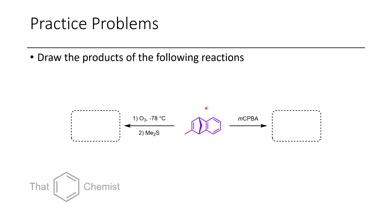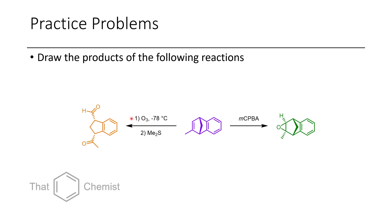In this first problem, we take this alkene and treat it with ozone followed by dimethyl sulfide. That's going to give us a different product than if we treat it with MCPBA. In the first case, we undergo the ozonolysis reaction, which affords this keto aldehyde. The reason we have stereochemistry on these two centers is because we had previously had stereochemistry on this sp3 bond outside of this ring. This five-membered ring, which was bicyclic, is now only the five-membered ring without the second cycle because it's been cleaved open using ozone.